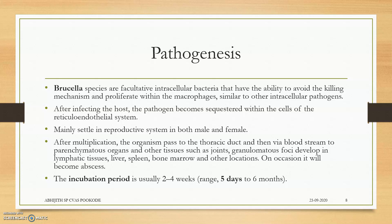After infecting the host, the bacteria become sequestered within the cells of the reticuloendothelial system. The reticuloendothelial system searches for the bacteria, but the bacteria hide inside it. They settle in the reproductive system in both male and female. After multiplication, the organism passes to the thoracic duct and via systemic circulation to joints, granulomatous foci, liver, bone marrow, and spleen. The incubation period is 2–4 weeks normally, but can range from 5 days to 6 months depending on the bacterial strain, load, and health status of the animal.